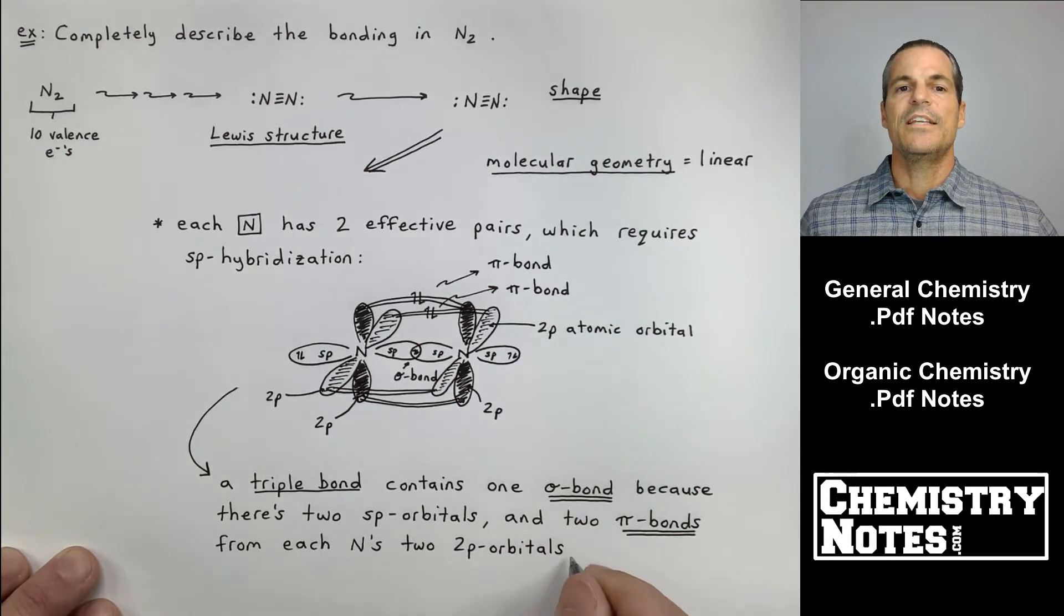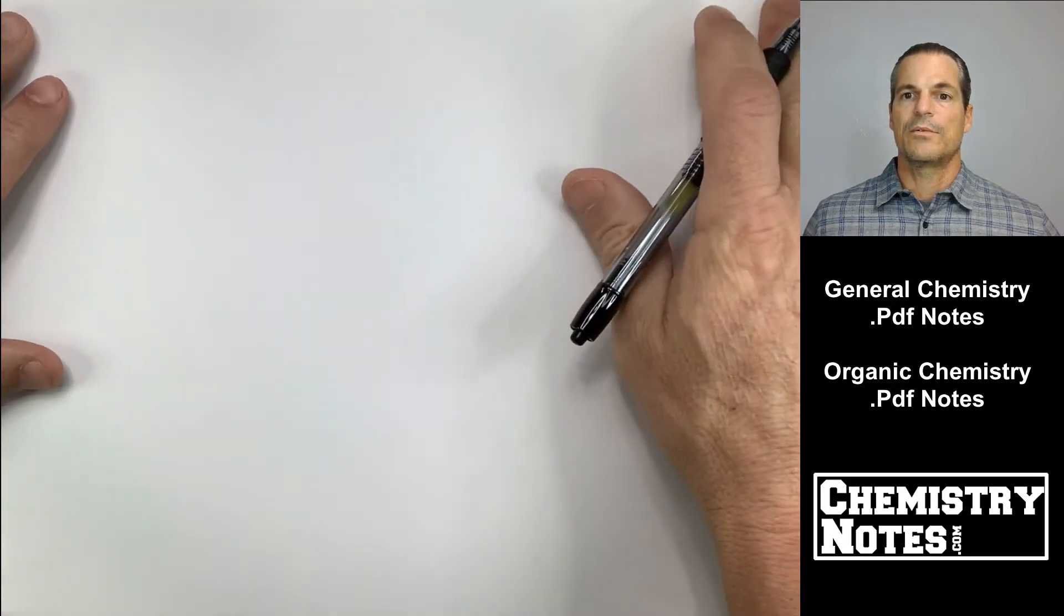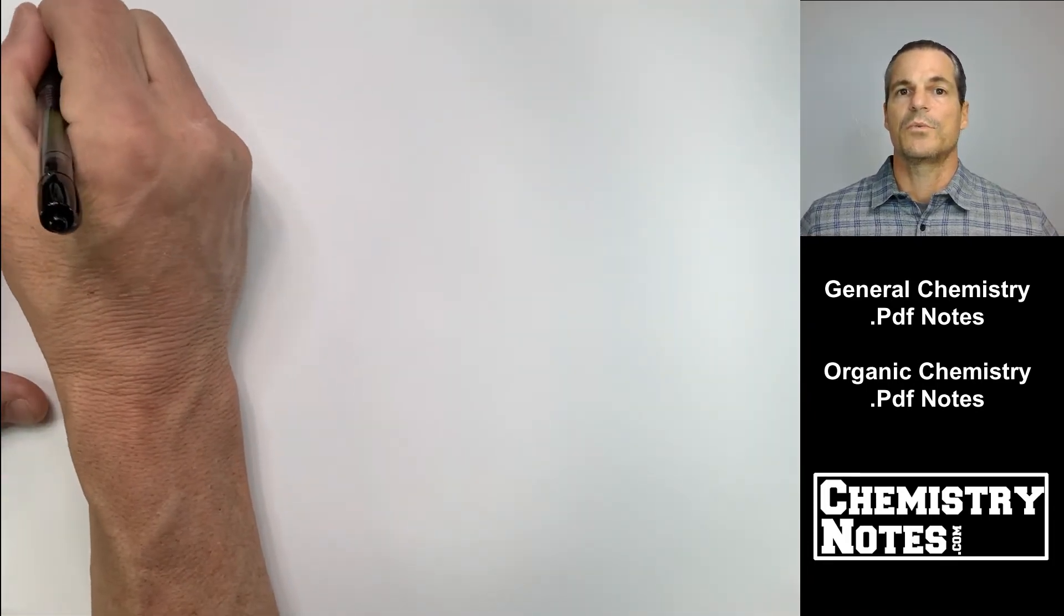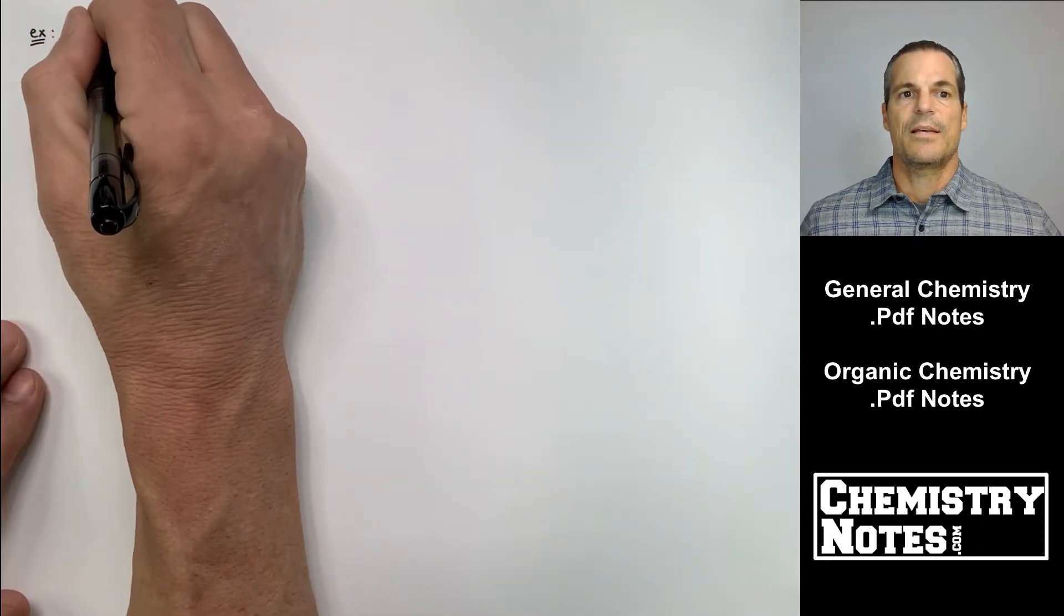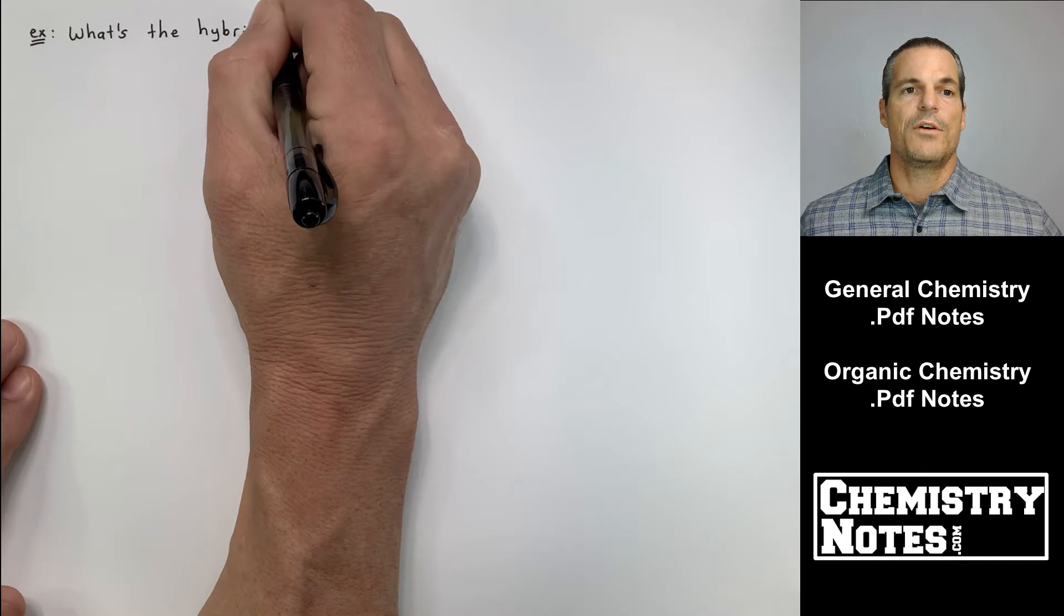Each nitrogen has two leftover P orbitals because it was SP. So two of the P orbitals were never used. Third example, this is the top of page three of our notes.